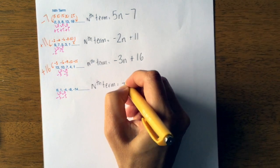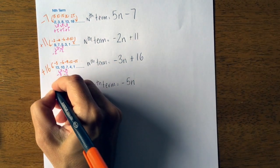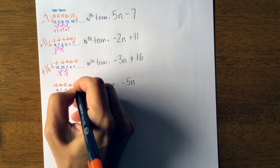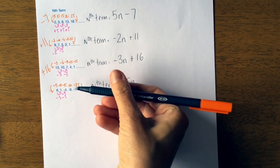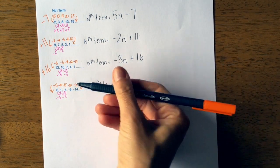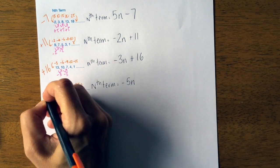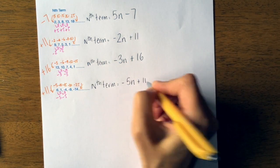I would write negative 5n. Let's write out our negative 5 times table: negative 5, negative 10, negative 15, negative 20, negative 25. How do I get from the negative 5 times table to our sequence? If I'm on negative 5 and I want to get to 6, I need to add 11. So this one would be negative 5n plus 11.